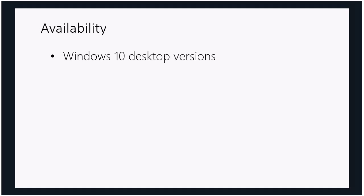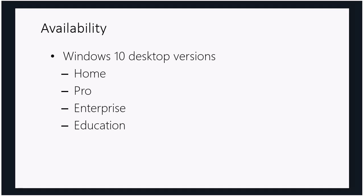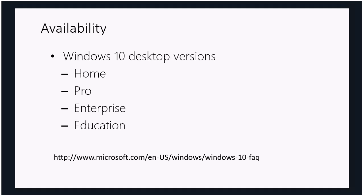There are going to be a number of Windows 10 desktop versions available: a Home user version, a Professional Pro version, an Enterprise version, and an Education version. All of these will be available via different means and different distribution methods. For example, the Enterprise SKU will only be available under volume licensing. The URL listed here will give you the FAQ on the different desktop versions available for you to roll out to customers.